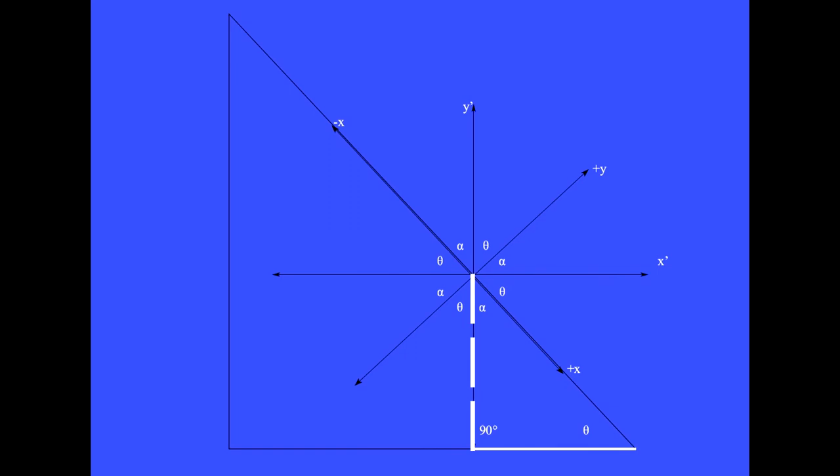In the lower right triangle, alpha equals 90 minus theta. Theta and alpha here also form a right triangle, so these two angles add up to 90 degrees.